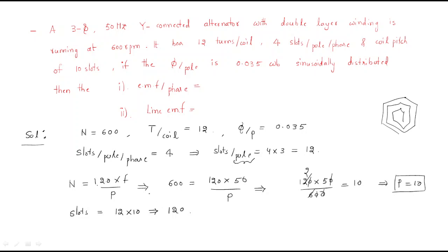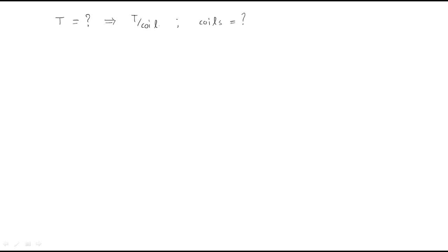Now we need to find the number of turns. He mentioned turns per coil, so first we find how many coils are available. Since it is a double layer winding, in double layer winding the number of coils equals the number of slots. Therefore, number of coils = 120.